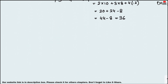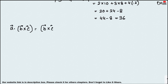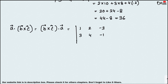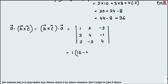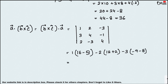For the second part, find a·(b×c). We can change the order: compute b×c first, then dot with a. Write the determinant with b as the first row: 1, 2, −3; c as the second row: 3, 4, −1; and a as the third row: 2, −3, 4. Expanding gives 13×1 − (−2)×14 + ... which simplifies to also equal 36.